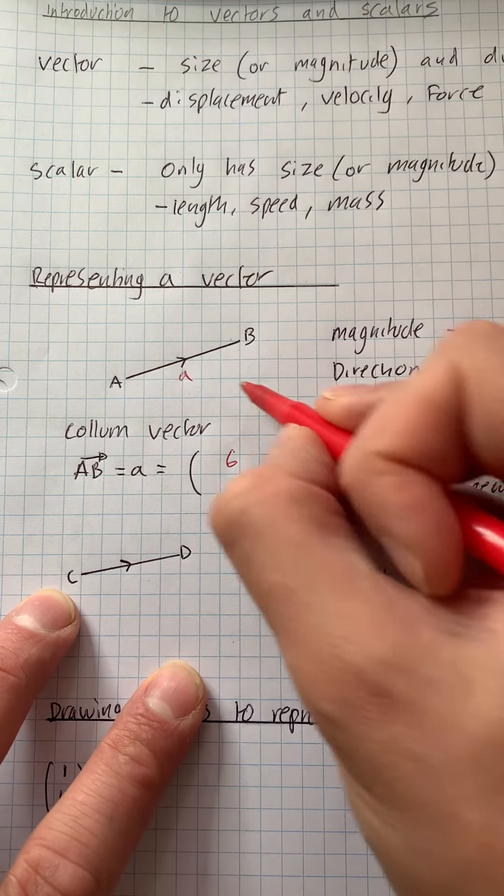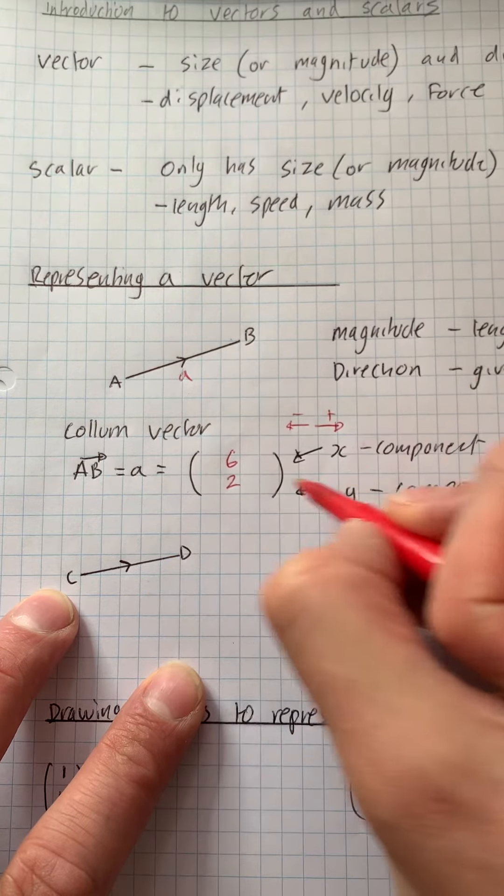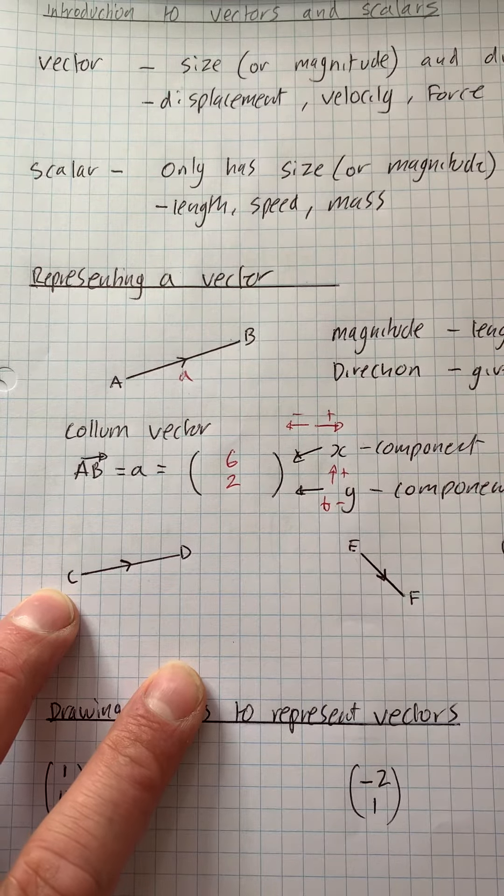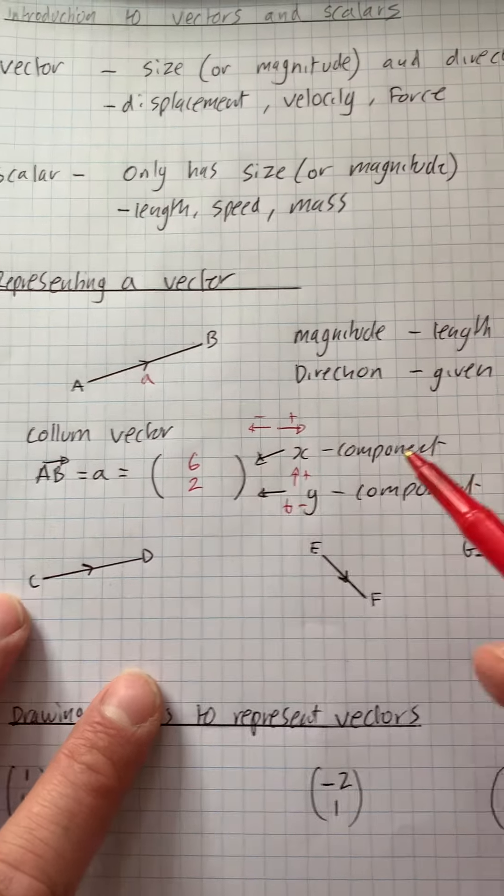And this is the Y component, and we're going up 2. So if we go up, it's positive, and we go down, it's negative, just like a coordinate grid. So our vector would be 6, 2.